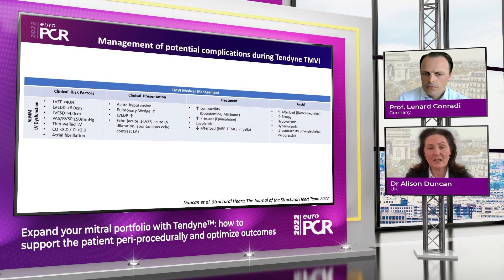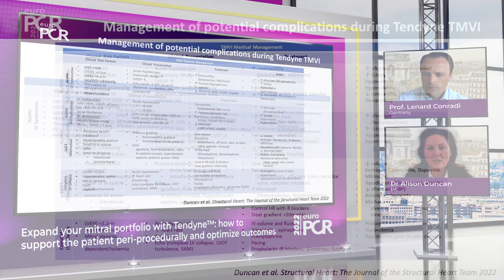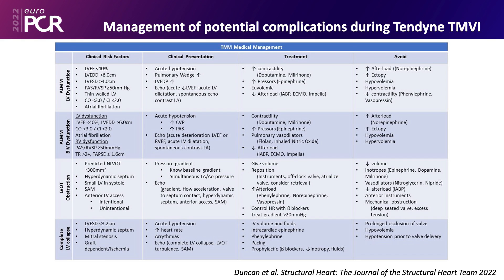At the time of Tendyne implantation, these patients are at risk — with removal of mitral regurgitation — of relative afterload mismatch and inability due to low contractile function. You need to discuss in the team brief with the anesthesia team that these patients may need support with dobutamine or milrinone. You may or may not need to reduce afterload with mechanical support and try to avoid vasoconstrictive inotropes. This requires continuous dialogue throughout induction and at the time of Tendyne implantation.